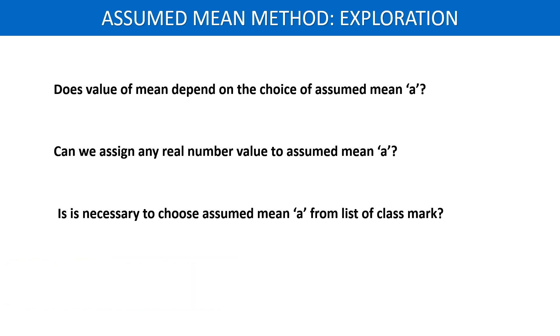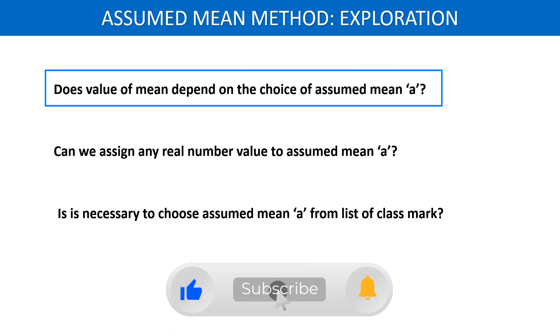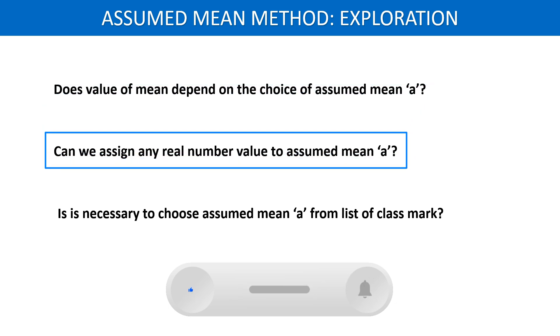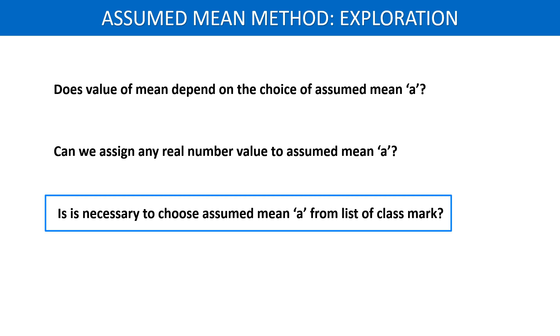Obviously, some natural questions come in our mind like does mean depend on the choice of A which is called assumed mean? In other words, can we assign any real number value to A or is it necessary to choose value of A from the list of class mark of the class intervals? We will answer all such questions in this video. At last, we will test the result by taking A equals 2000 and square root 3 also. So, hold your breath and observe what is going to happen.